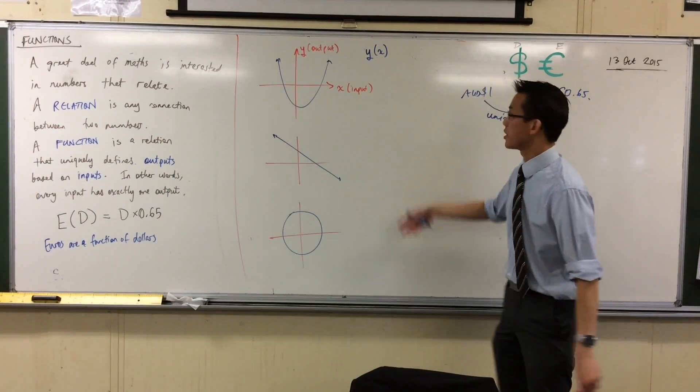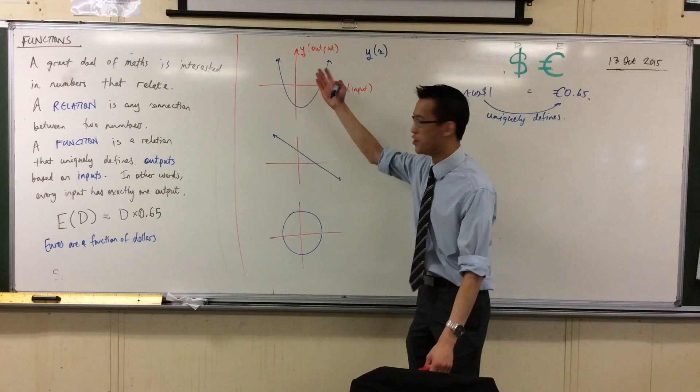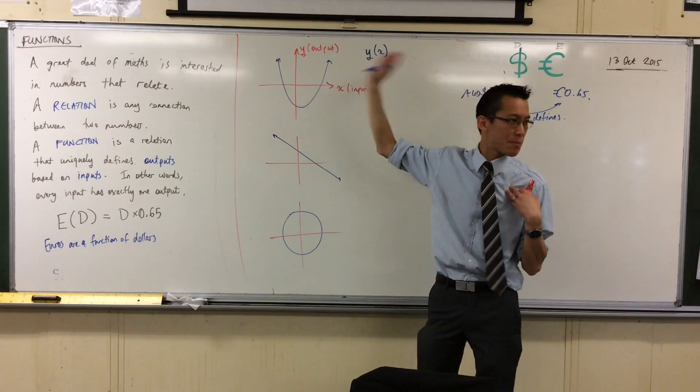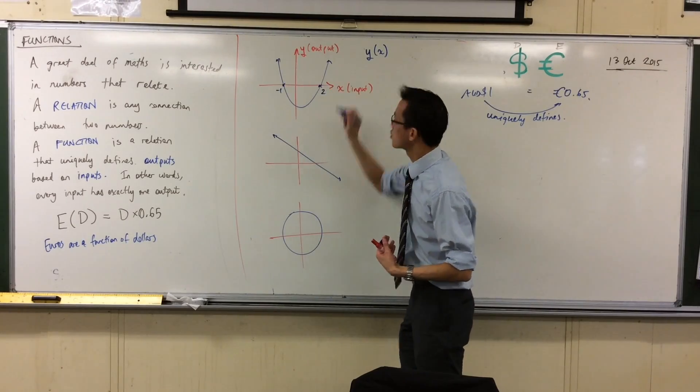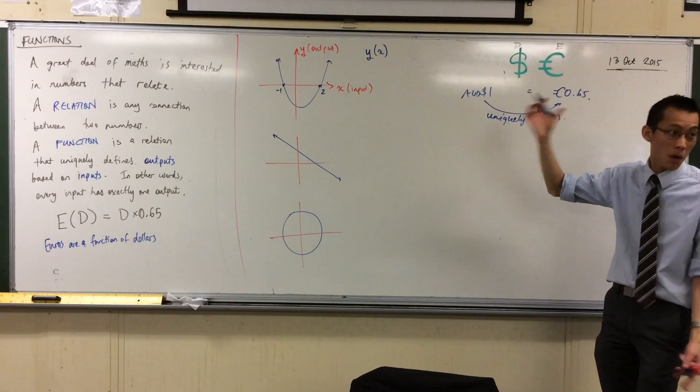Now, y as a function of x. They haven't given you any markings or anything like that. I have no idea where this is. Let's just, for the sake of our understanding, slap some numbers on here. So for instance, if that was negative one and that was two, what might the equation of this parabola be? What might it be?